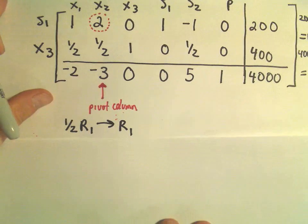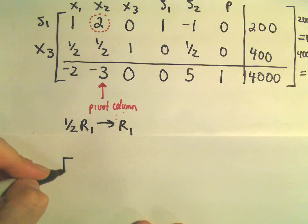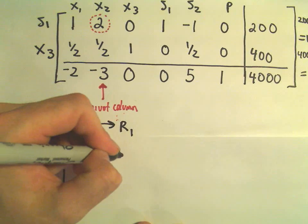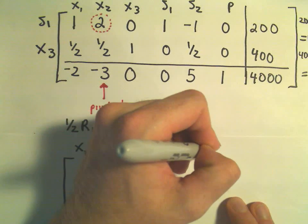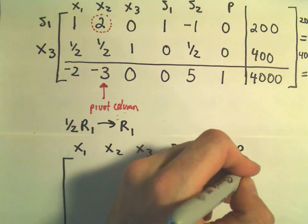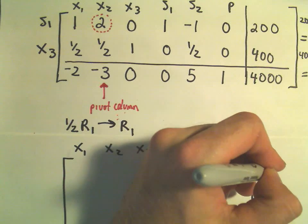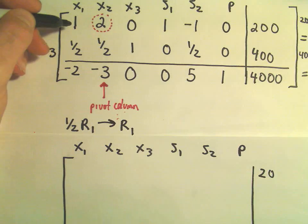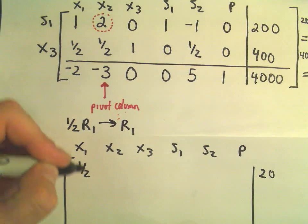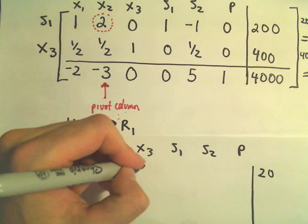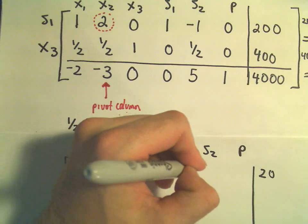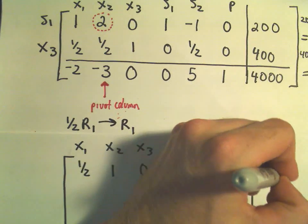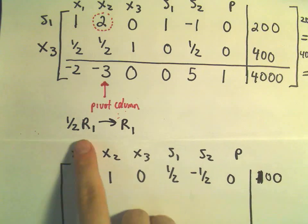Let's do all the arithmetic here. We've got X1, X2, X3, S1, S2, P. If we take one-half of the first row, we'll get one-half; one-half of 2 which will be 1; then 0; one-half; negative one-half; 0. Our 200 will now turn into 100. We're dividing everything by 2.